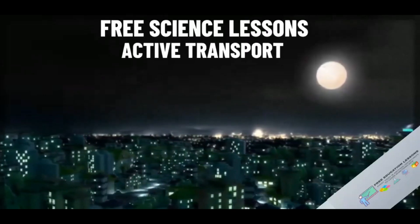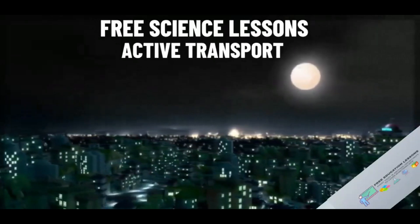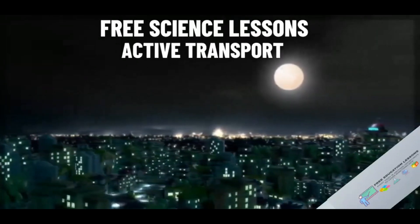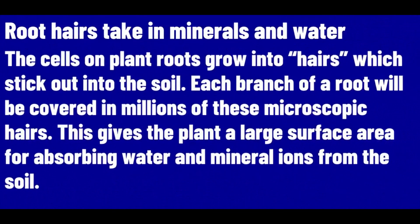Root hair cells take in minerals and water. The cells on plant roots grow into hairs which stick out into the soil. Each branch of a root will be covered in millions of these microscopic hairs. This gives the plant a large surface area for absorbing water and mineral ions from the soil.